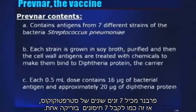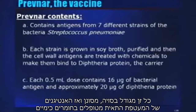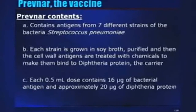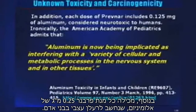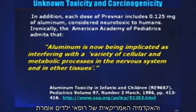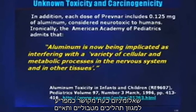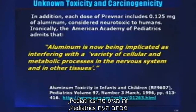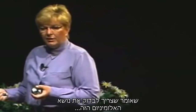So what's in Prevnar? Prevnar contains seven different strains of strep pneumonia — that's like getting seven vaccines in one shot. Each strain is grown in soy, purified with cell wall antigens, treated with chemicals, and then bound to diphtheria, so kids get another whole dose of diphtheria with that. In addition, each dose of Prevnar has 0.125 milligrams of aluminum, considered neurotoxic in humans. The American Academy of Pediatrics states that aluminum is now being implicated as interfering with a variety of cellular and metabolic processes in the nervous system and other tissues — this comes from the Journal of Pediatrics, saying we need to be looking at this aluminum issue.